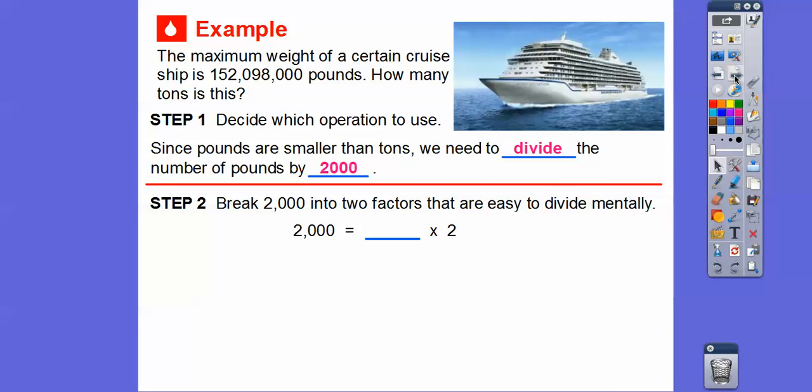My clock just told me it's on the hour right now. So, all right, so we're going to break 2,000. It's easier to divide if we break it into smaller numbers, but break 2,000 into factors that are easy to divide mentally. So 2,000 is the same as 1,000 times 2.